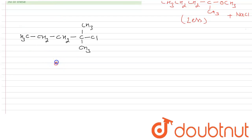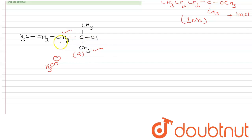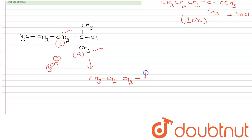The strong nucleophile OCH3⁻ will abstract a proton from the alpha carbon. There are two possibilities — it can abstract the proton from path A or path B. If the product is formed through path A, the product will be CH3–CH2–CH2–C(CH3)=CH2, which is the Hofmann product — the less substituted alkene.